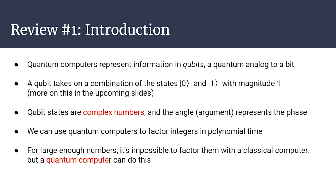Let's review what we've talked about so far. A quantum computer is different from a classical computer because it represents information in qubits — a quantum analog to a bit that is a combination of 0 and 1 rather than just being 0 or 1. Qubits hold a lot more information than classical bits. Each qubit state is represented by a complex number, and as a wave function, it also has a phase. We're going to use a quantum computer to factor integers in polynomial time. Pause the video and make sure you've got what's going on.